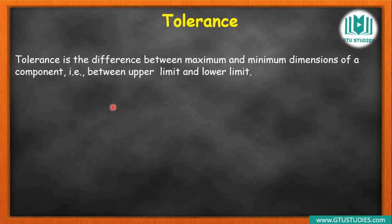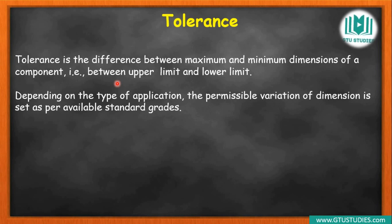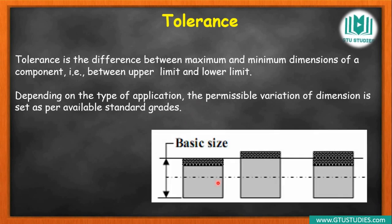Tolerances is the difference between the maximum and minimum dimension of any component — meaning between the upper limit and the lower limit. Now we decide how to set the upper limit and lower limit. Suppose the basic size allows 0.02 mm above and 0.02 mm below. This depends on the product application, the basic size, and the standard size — ultimately it defines the upper and lower limit.